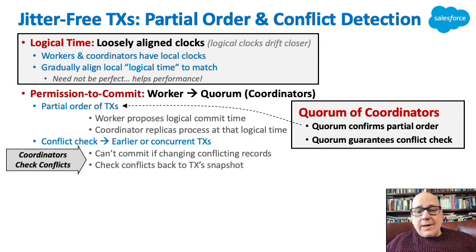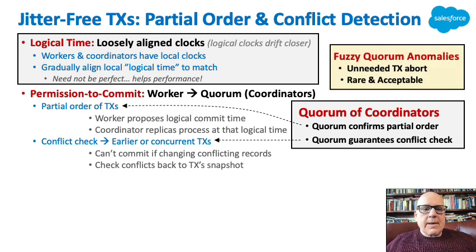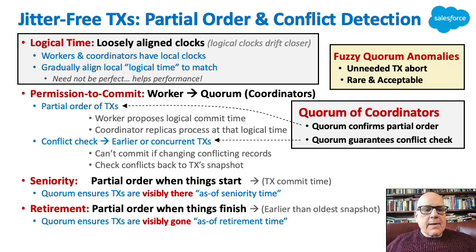Coordinators can then check for conflicts against any transactions processed at an earlier logical time, seeing if there are conflicts back to the snapshot time. You end up with a quorum because every transaction T1 is processed at a quorum of servers, and T2 also is, so there will be at least one overlapping coordinator. There are fuzzy quorum anomalies because sometimes a transaction doesn't commit but might cause a conflict — that's acceptable and rare. Seniority defines the partial order of when things start — the transaction commit time. Retirement is a partial order of when things finish, when they're earlier than the oldest snapshot and no longer needed for conflicts. Quorum ensures transactions are visibly gone as of the retirement time.